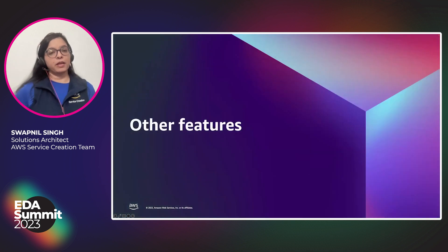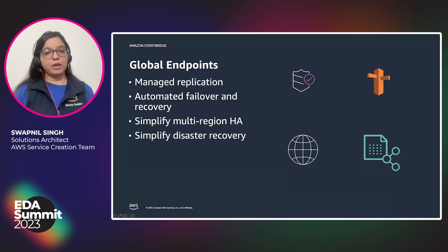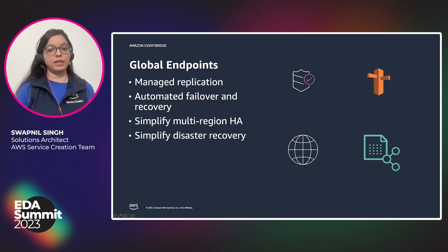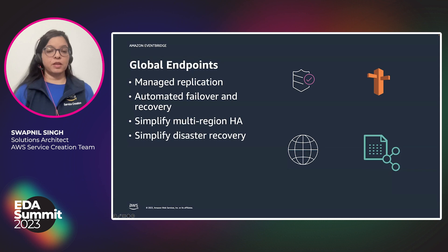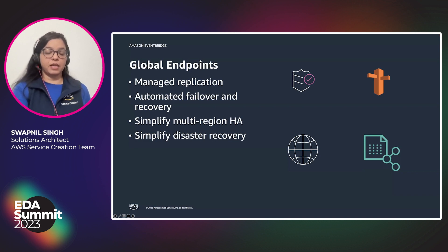One important feature EventBridge provides is global endpoints. Global endpoints provide managed replication between event buses across two different regions. Route 53 is used to health-check the event bus endpoint, and once the primary event bus is not responding due to unavailability, events are routed to a secondary event bus, allowing multi-region high availability and disaster recovery.